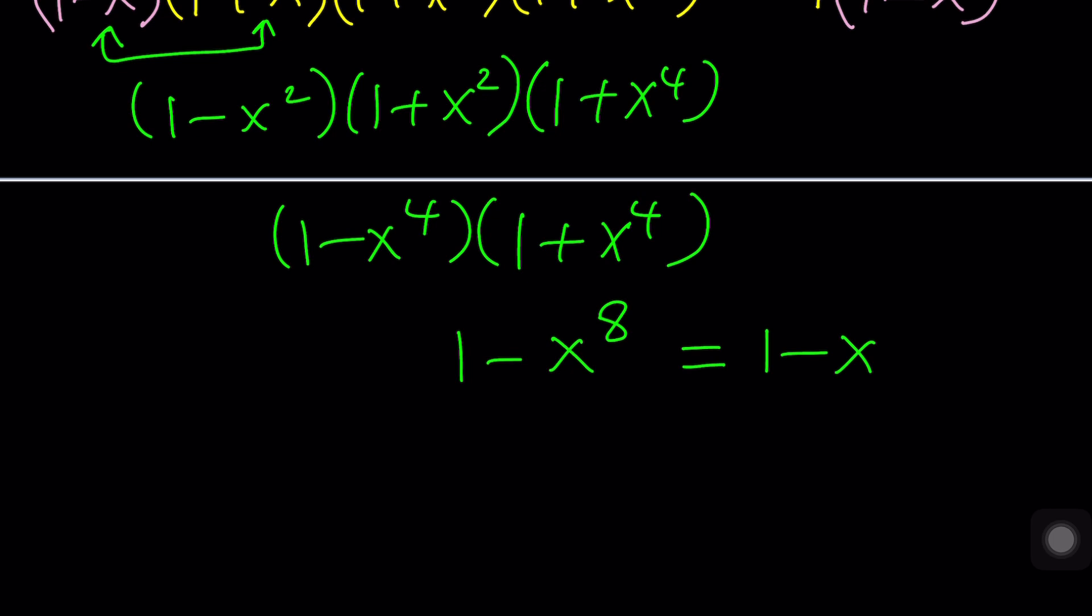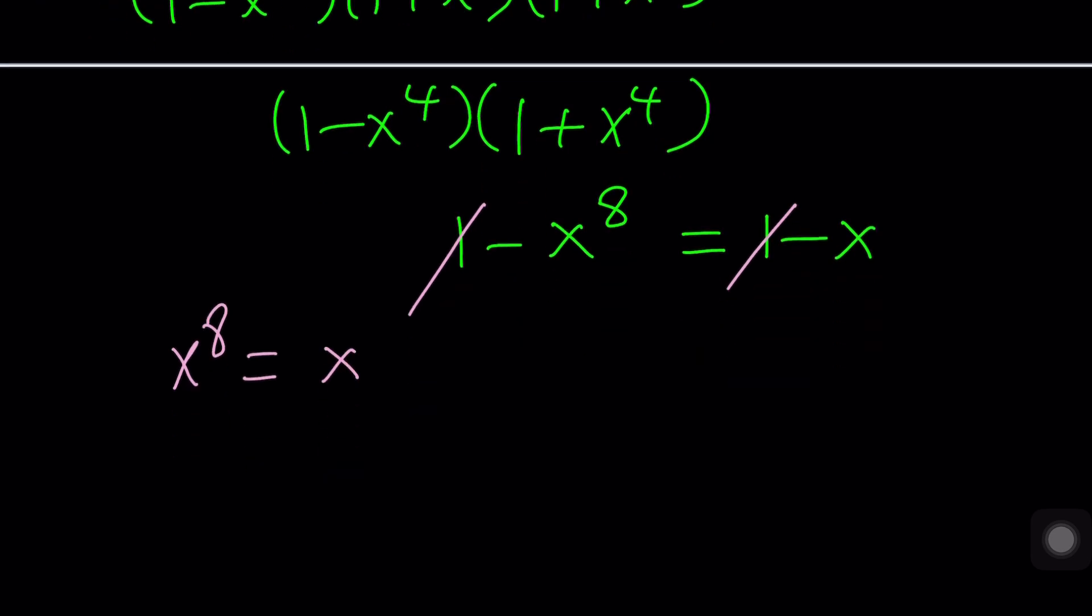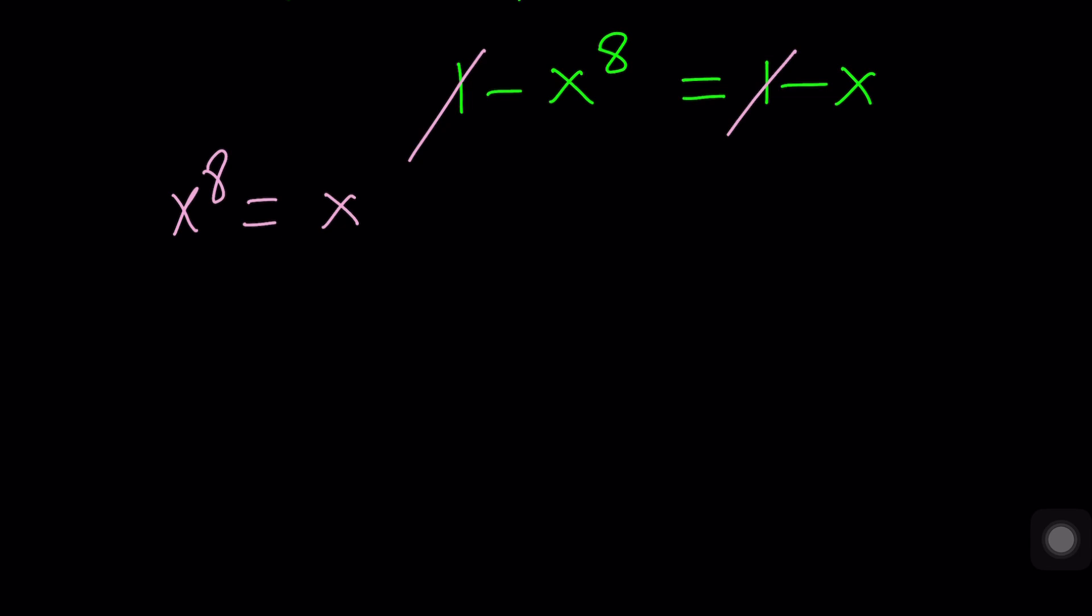So now, we can go out and do the following. Subtract 1 from both sides, or just get rid of 1. We end up with negative x to the eighth equals negative x. If you want, it's not necessary, but you can multiply or divide both sides by negative 1 to get x to the eighth power equals x. Some people like it that way. I like it that way. I don't like the negativity, even with expressions.